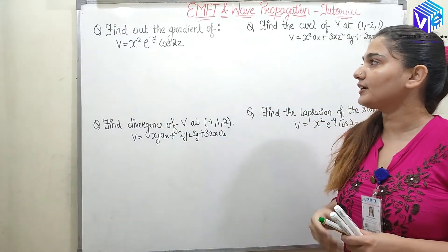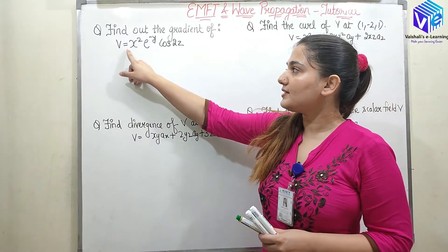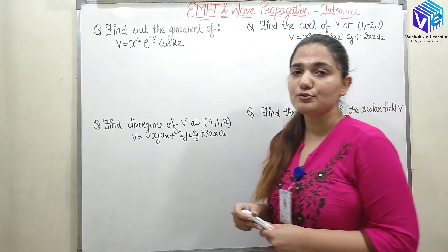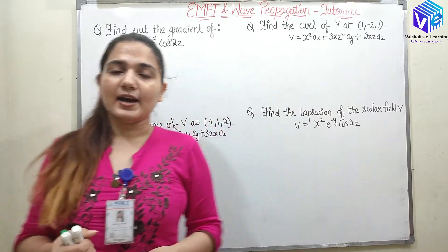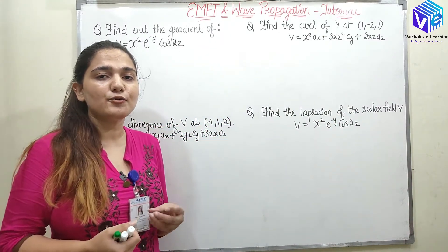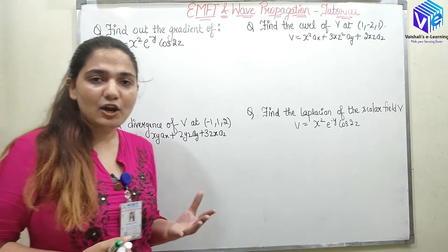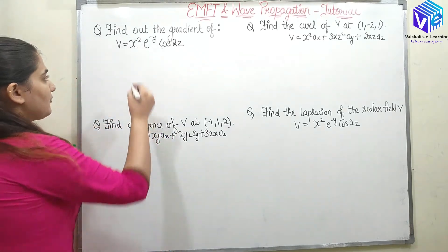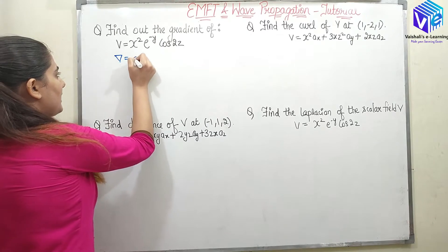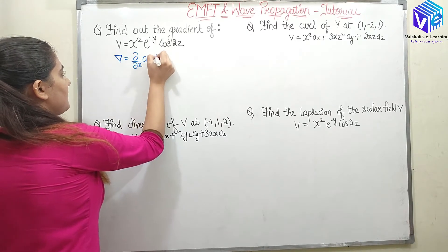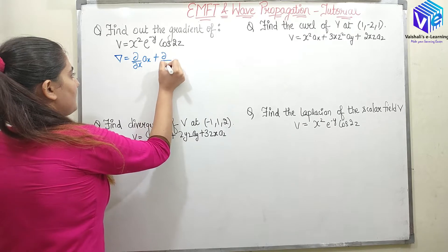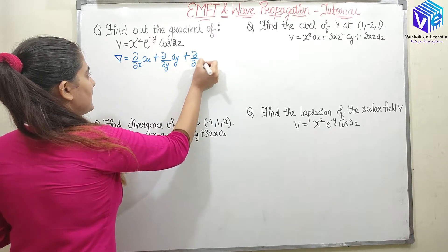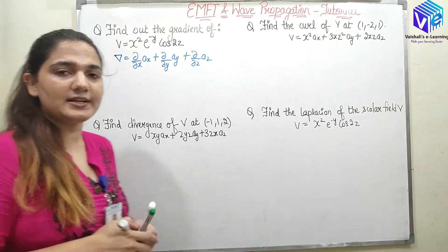The first question is: find the gradient of V = x² e^(-y) cos(2z). We need to find the gradient. I hope you have seen the video on the del operator. The del operator is equal to (∂/∂x)ax + (∂/∂y)ay + (∂/∂z)az. So this is the del operator.